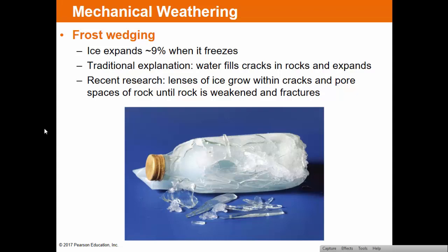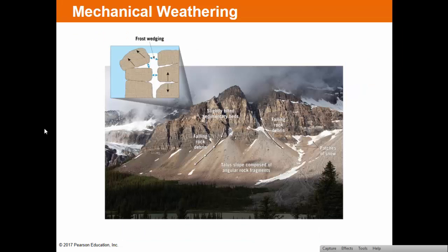Two basic types of mechanical weathering are wedging and unloading. Frost wedging occurs because ice expands 9% when it freezes. Water gets into cracks, freezes, expands, and cracks the rock. Research also shows that ice freezes in lens shapes that lift and move rocks apart. You can see this on mountain ranges where talus slopes form — rock broken off by frost wedging falls down and creates aprons of smaller rock. Salt wedging also occurs when saltwater evaporates in rock crevices, leaving salt crystals behind that grow larger, pushing rocks apart. This is common along rocky coastlines and in arid regions.